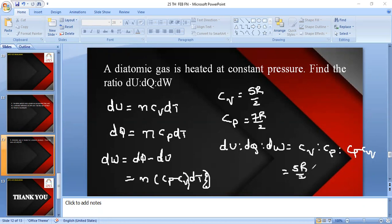And just write here: 5R by 2, 7R by 2, Cp minus Cv, 7R by 2 minus 5R by 2, that is 2R by 2, simply it is R only. So, and of course you can write 2R by 2 also.